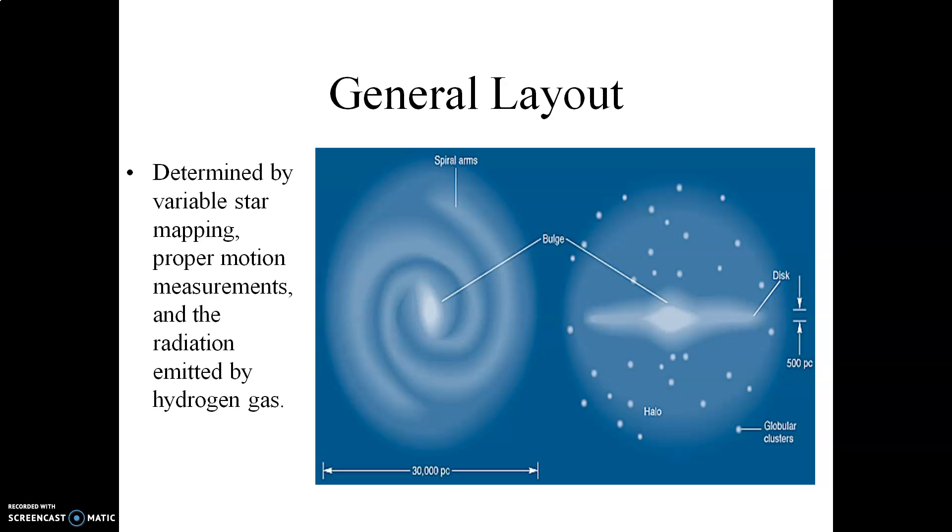Here's the basic layout of a typical spiral galaxy, such as the Milky Way. You determine the layout of such a galaxy, say the Milky Way, by doing mapping of variable stars, proper motion measurements, and the radiation emitted by hydrogen gas. So for the Milky Way, right here is a face-on view. The total size of the Milky Way from one side of the disk to the other is about 100,000 light years.